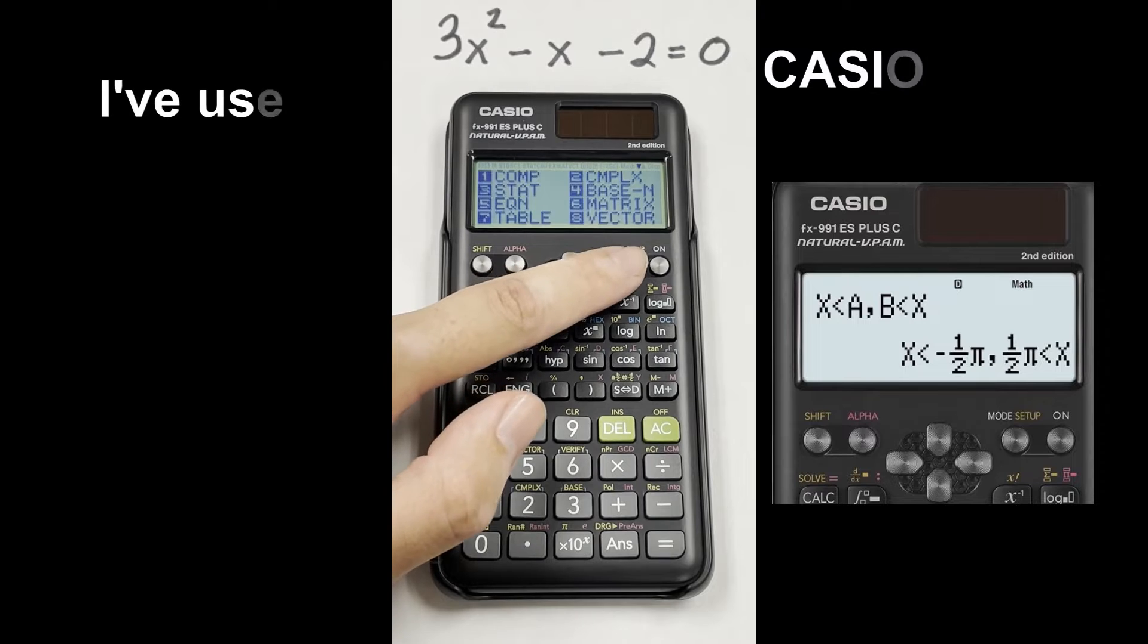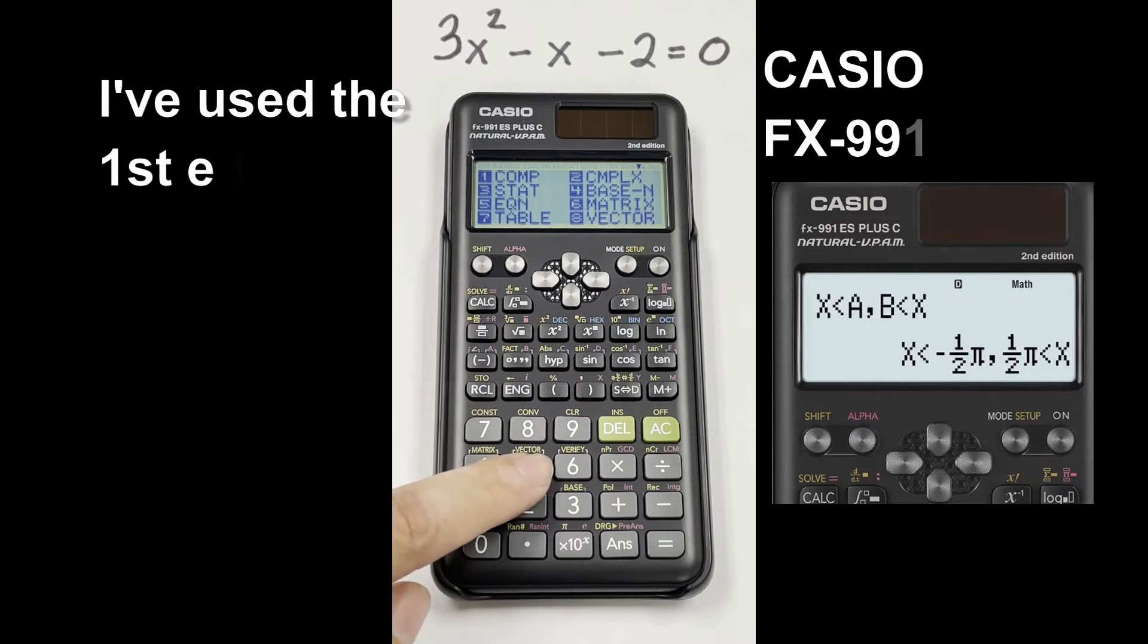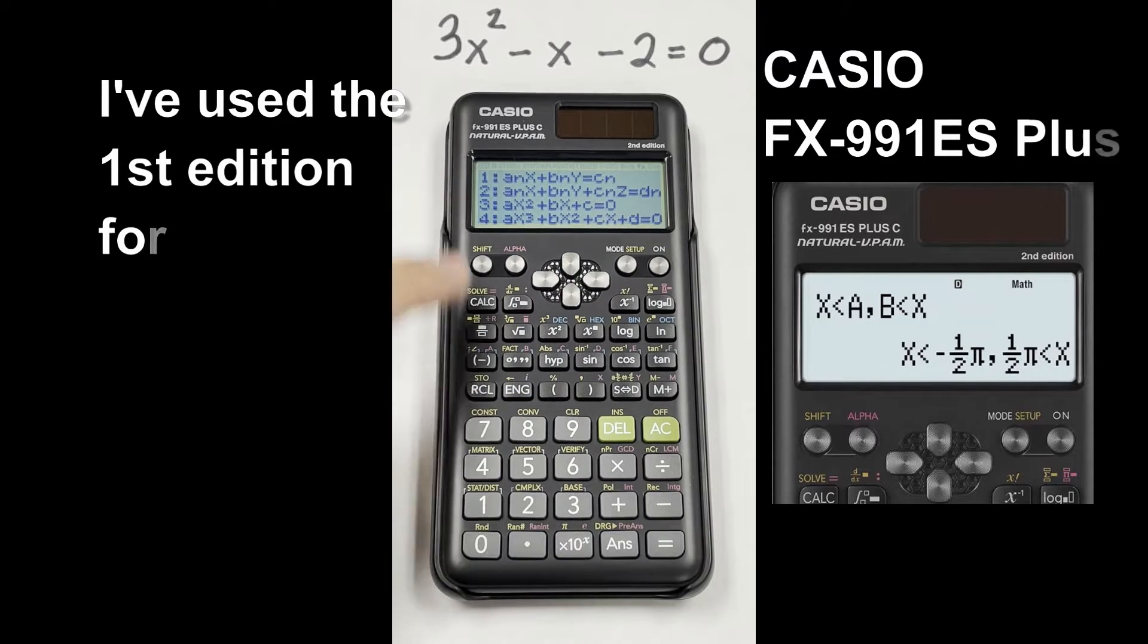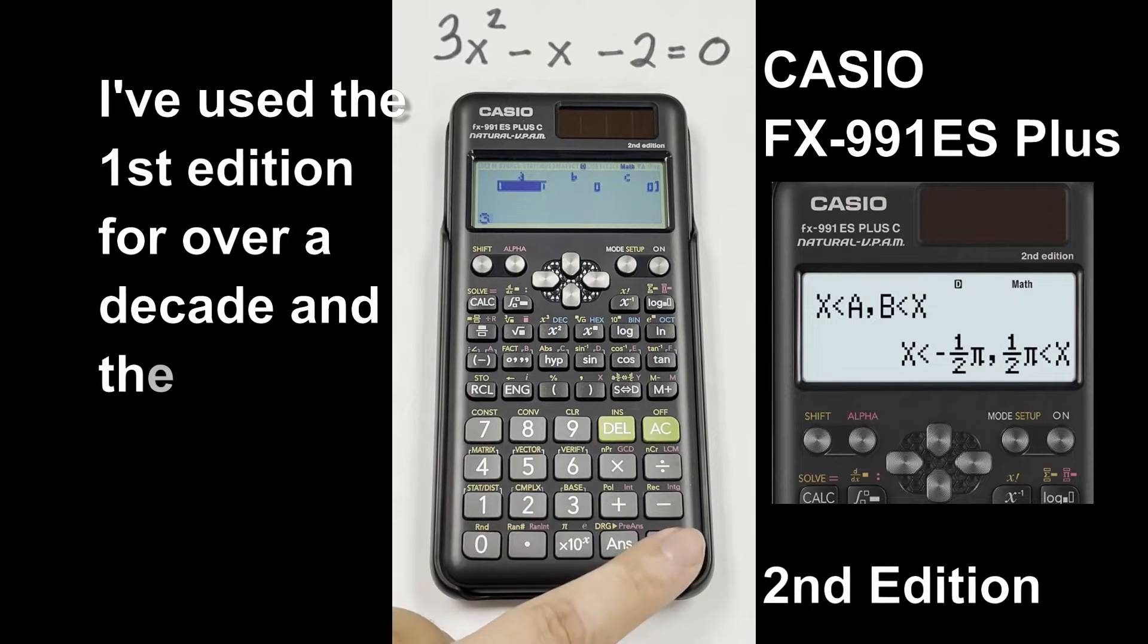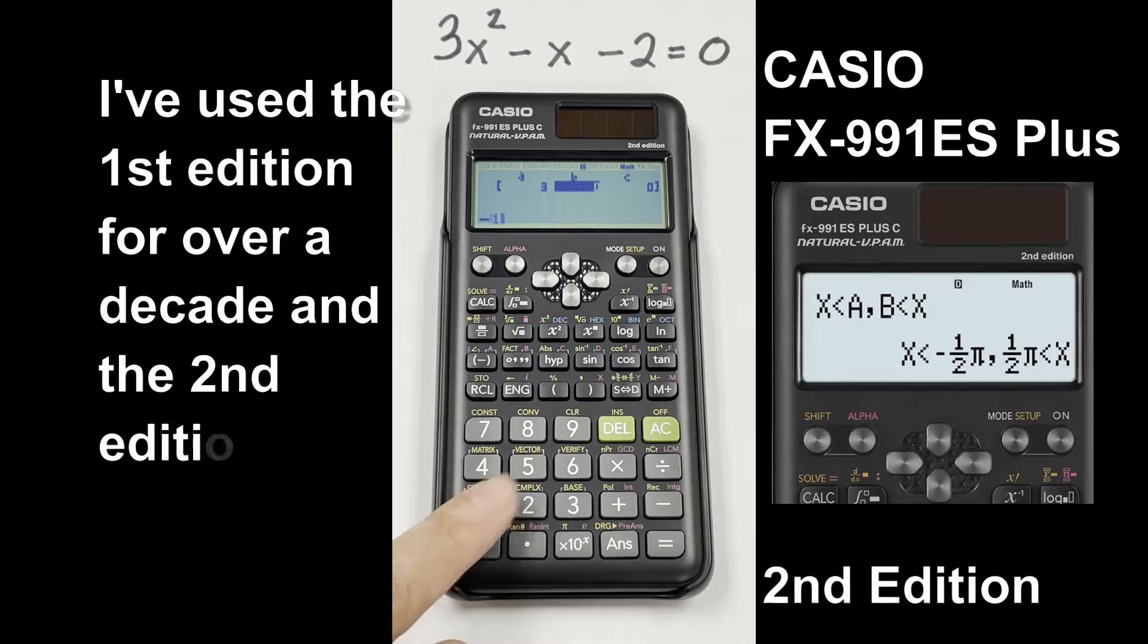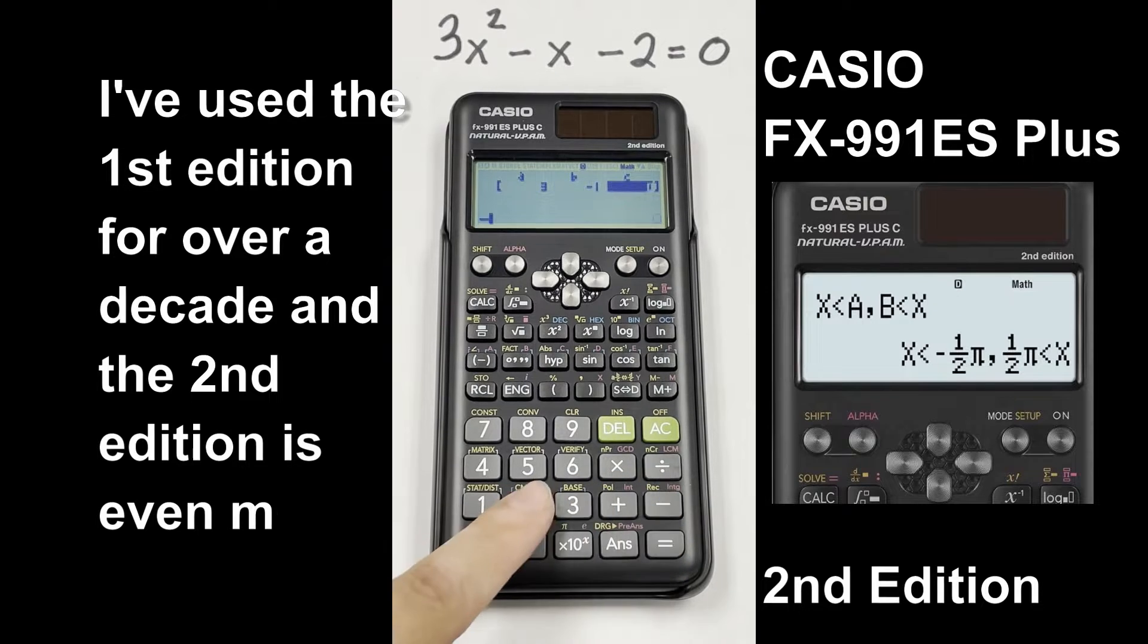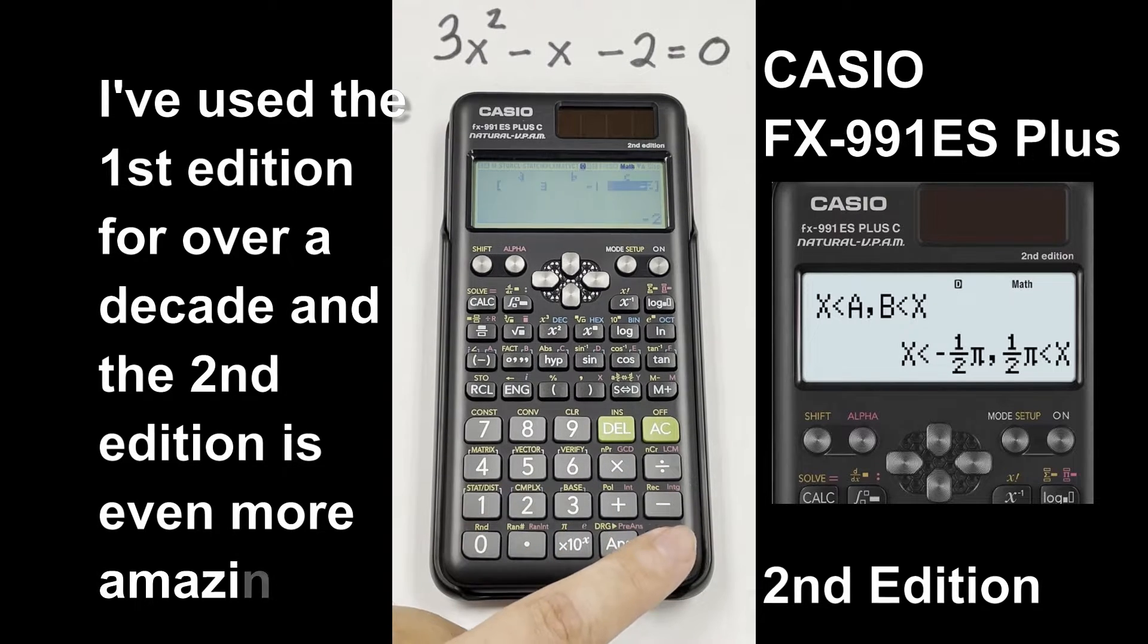We're going to start by going to mode, and then we're going to choose equation, 5, and our quadratic, 3. And then we put in our A values, so we got 3, our B value is negative 1, and our C value is negative 2. And we get our two solutions, 1 and negative 2 thirds.